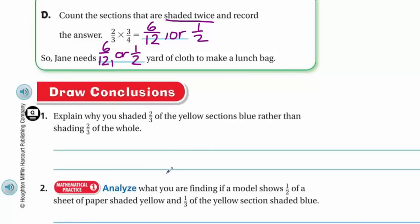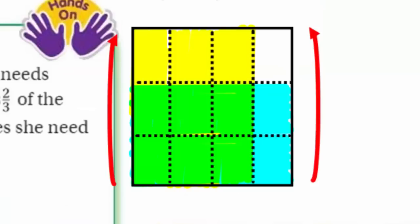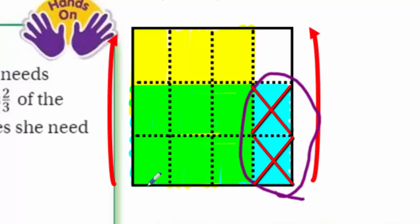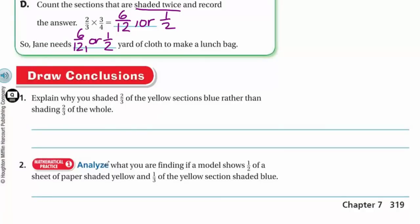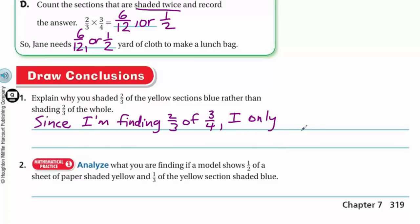Drawing conclusions: explain why you shaded two-thirds of the yellow sections blue rather than two-thirds of the whole. In my model I actually showed two-thirds of the whole, but we weren't counting those sections outside the three-quarters. Since the problem said we were finding two-thirds of three-quarters — not two-thirds of the whole — I only needed to find two-thirds of the yellow sections.